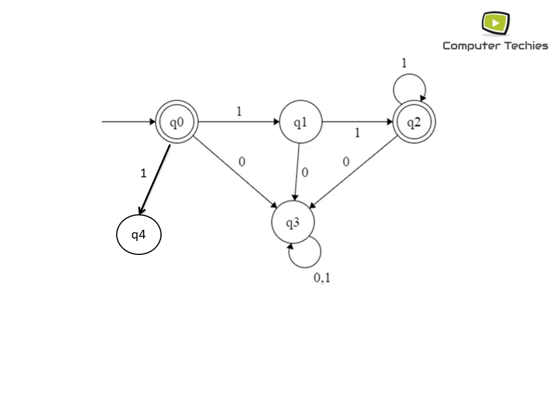If we are in state Q0 and apply input 1, the finite automata leads us to state Q1 as well as state Q4 — this is nothing but NFA, which leads to one or more states on a single unique input. Now if we add an epsilon transition from Q4 to Q3, it becomes Epsilon-NFA — the NFA with epsilon transitions.